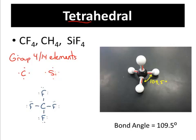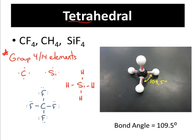You see this typically in group four or fourteen elements. They have four outer shell electrons and therefore will take four more electrons to fill up their outer shell. Silicon is another element in addition to carbon that can have four electrons on the outside. If you see four of any element around a central atom, you know this shape has to be tetrahedral — every single bond has a bond angle of 109.5 degrees.